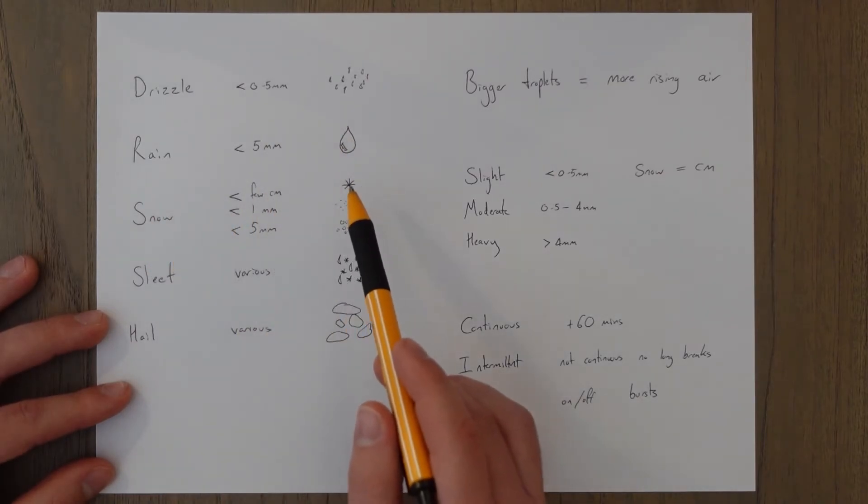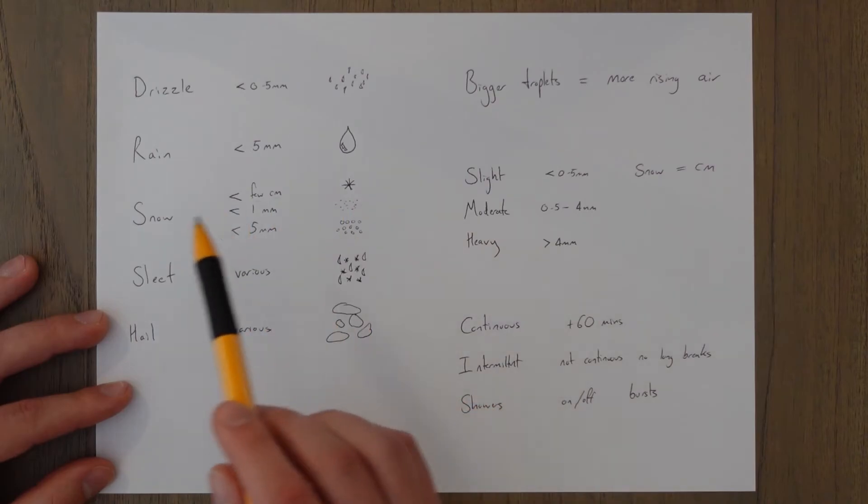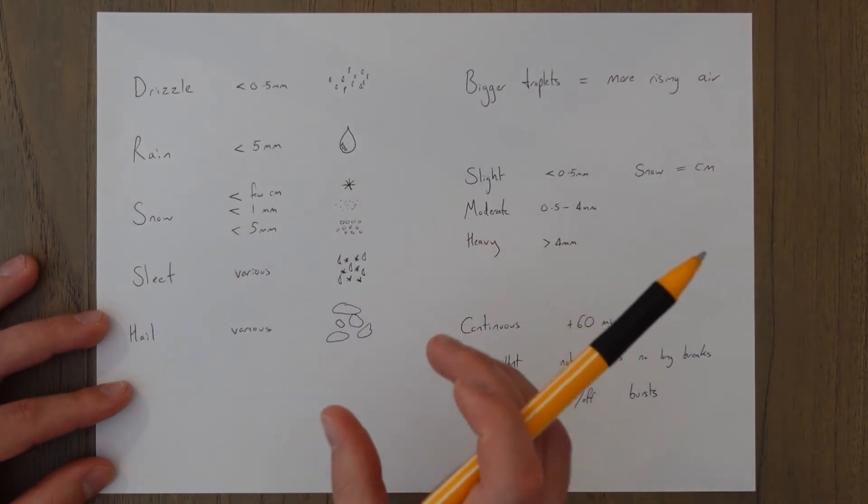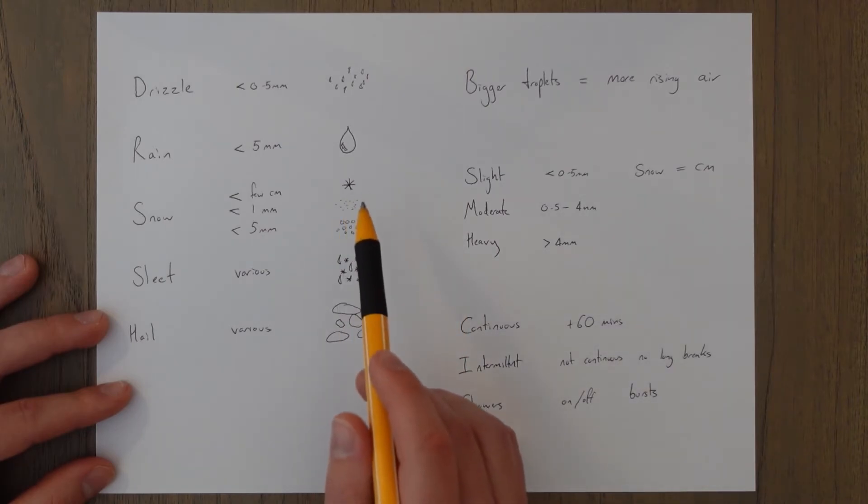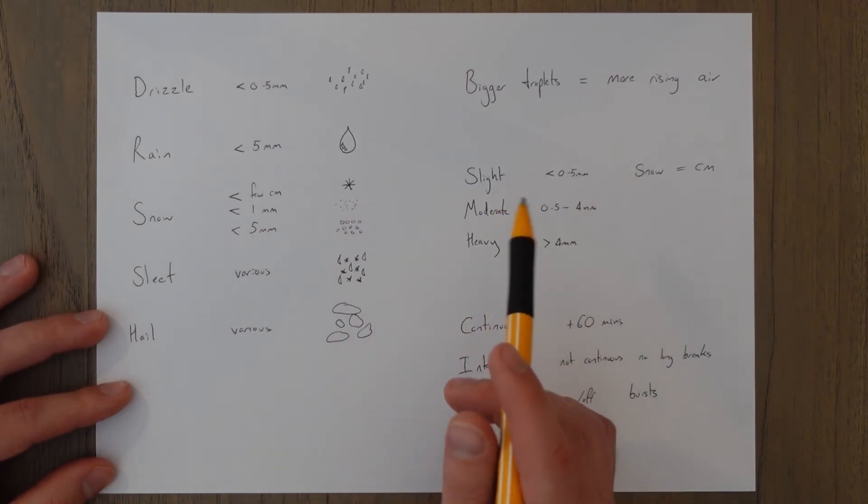You've got snow in a few forms. You get the flakes, the grains and the pellets. Flakes can be a few centimeters in size. The grains would be about 1 millimeter or less and pellets are around 5 millimeters.